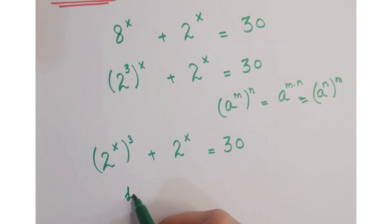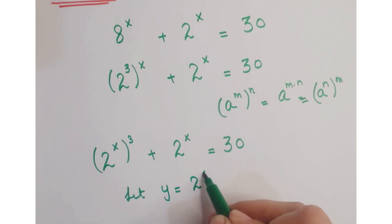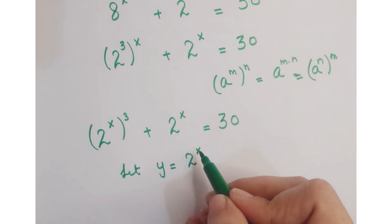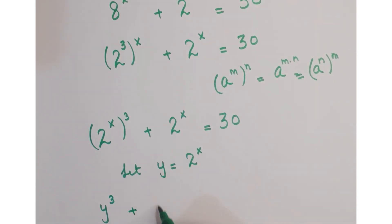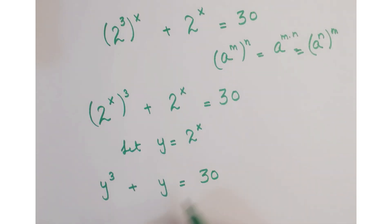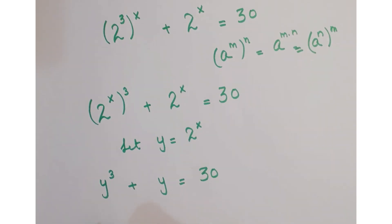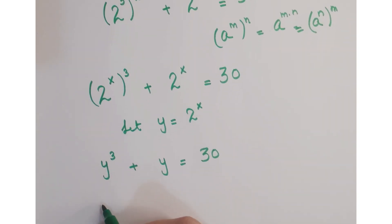Now let's assume that y equals 2 to the power x. So you can write it as y cubed plus y equals 30. Now we have a cubic equation here.